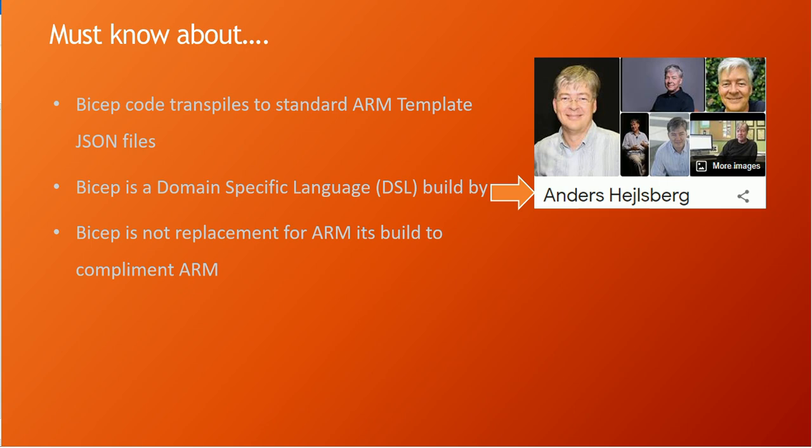The third and most important thing is Bicep is not here to replace ARM. ARM will always exist. Whatever investment of your time and money as an organization you have done building your ARM templates will still be vital. What this Bicep component will do is simplify your life and make it easy for creating new templates or new deployments. It will also simplify your existing ARM repository management by transforming them into Bicep, giving you a more crisp and reasonable code base.